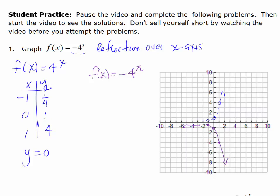Let's double check by altering the ordered pairs. When you reflect over the x-axis, you change the sign of all of your y values, so the x values remain the same and all your y values you're basically just taking the opposite of them. So negative 1 and negative 4: negative 1 down a quarter, 0 down 1, and over 1 down 4. And that works.